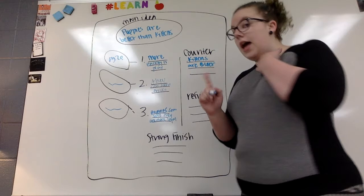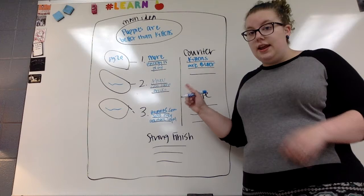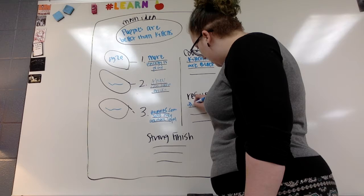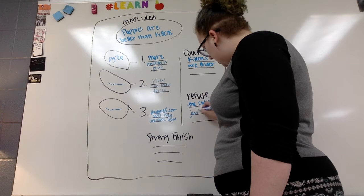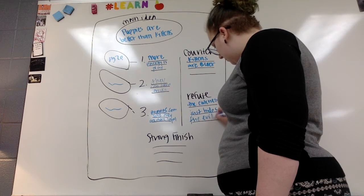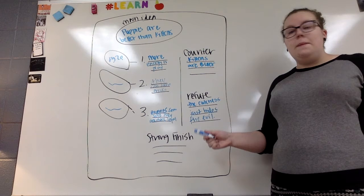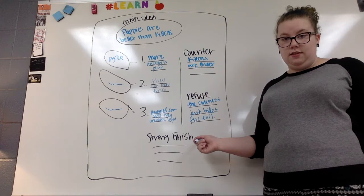But then remember, now I have to refute it. I have to prove that wrong and say why my side is still better. But the cuteness just hides the evil. So I've said even the other side is going to say that kittens are cuter, my side is still right because the cuteness is just hiding the evil of the kittens.